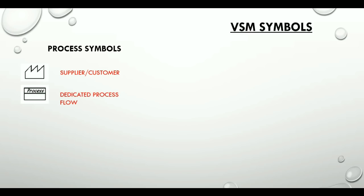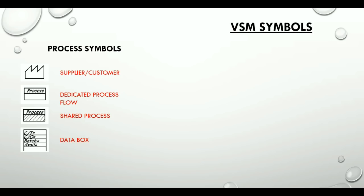The process icon is a dedicated process flow icon representing a process, operation, machine, or department through which material flows. It represents one department with a continuous internal and fixed flow. The shared process icon represents a process, operation, department, or work center that other value stream families can share. The data box icon goes under other icons and captures significant information required for analyzing and observing the system. The work cell icon indicates that multiple processes are integrated in a manufacturing work cell.